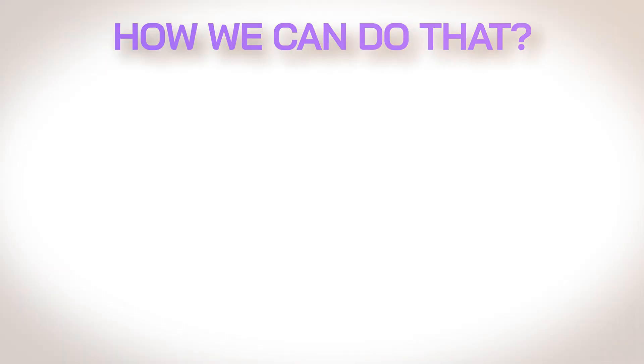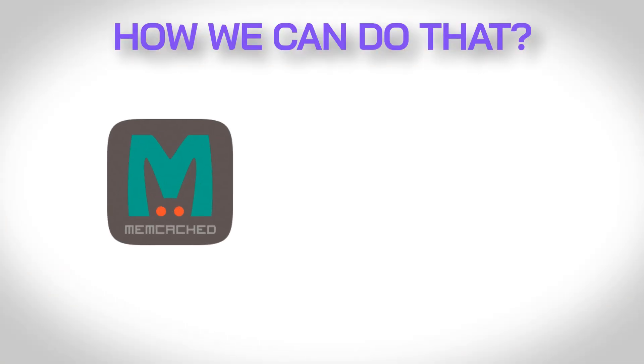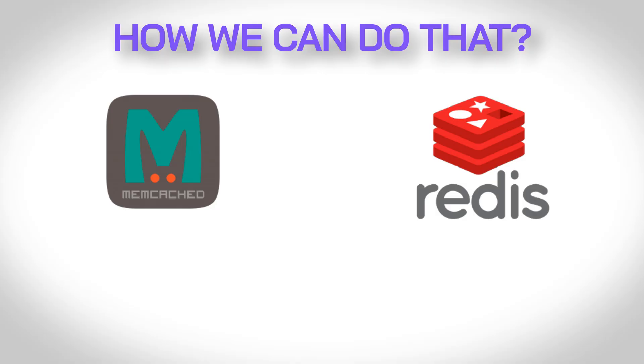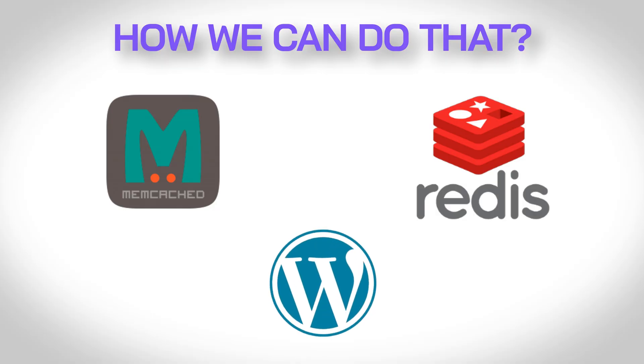Now, how do we enable that on our Divi website? There are a few ways to do that. The first one is you can use Memcached or Redis on your server side. That needs to be enabled by your host, or if you've got a managed WordPress host like Cloudways, it usually is activated by default and you can switch it on and off right there. But if you do not, you can go ahead and add that with the WordPress object cache, which is a little bit slower than the other two options, but it's another option out there for you.